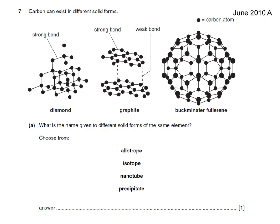Here's a past paper question: Carbon can exist in different solid forms. What is the name given to the different solid forms of the same element? The word is allotrope.